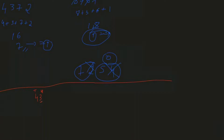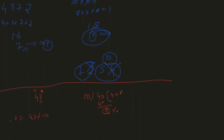How can I get the digit 3 from 43? Simple mathematics: if I divide 43 by 10, the remainder is 3. And 43 divided by 10 gives quotient 4. So 43 modulus 10 gives me 3, and 43 divided by 10 gives me 4.